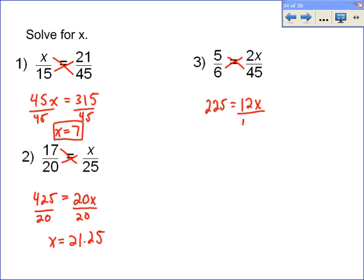And then you divide both sides by 12. And when you divide 225 divided by 12, you find out that the answer is x equals 18.75. And so 2 times 18.75 would be 37.50. And that means 5 over 6 is the same as 37.50 over 45.